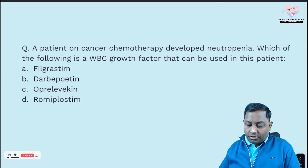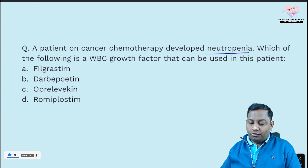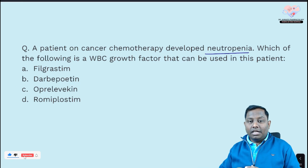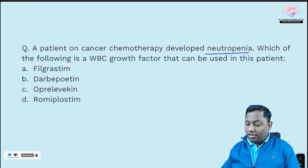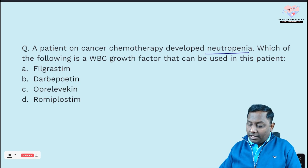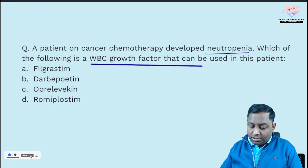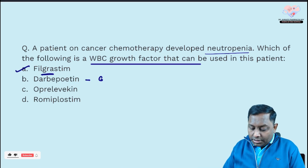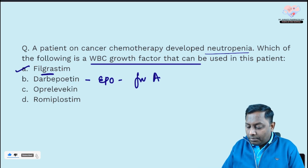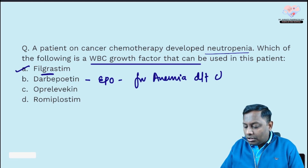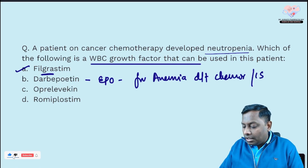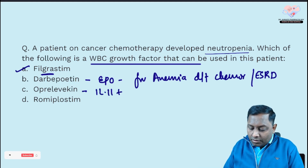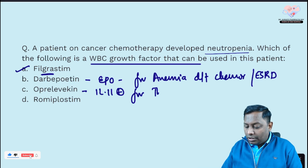Next question: a cancer patient on chemotherapy develops neutropenia. Chemotherapy-induced neutropenia is a high-yield topic. For chemotherapy-induced nausea and vomiting, we use 5-HT3 antagonists like ondansetron; for diarrhea, loperamide. The question asks which WBC growth factor is used — the answer is filgrastim, a granulocyte colony-stimulating factor. Darbepoetin is an erythropoietin analog for chemotherapy-induced anemia or end-stage renal disease.